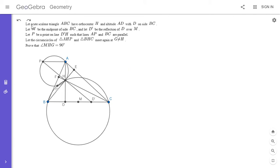We have an acute scalene triangle ABC. H is the orthocenter, AD is the altitude where D is on BC, M is the midpoint of BC, and D prime is the reflection of D over M.